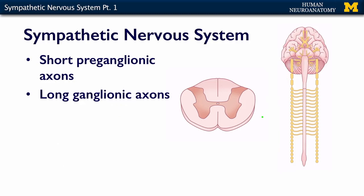So the axons of the preganglionic neurons are short because it's not very far from the spinal cord here to the chain ganglia. So this neuron here has a very short, relatively short axon compared to the target.